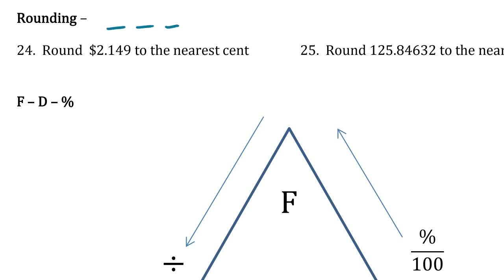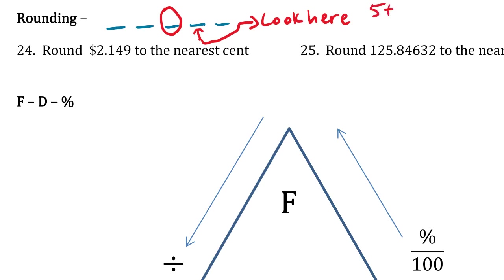The idea is: if you have a number and you want to round to a certain digit, you look at the digit to the right of it. For five and above, we round up; for four or below, we round down, which means we don't change the circled digit. If we round up, the circled digit goes up by one; if we round down, we just cut off the remaining decimals.